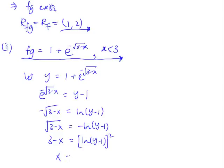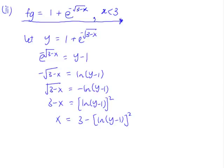Making x the subject. We get x equals 3 minus the ln of y minus 1 square. So this is the x the subject. So therefore, fg inverse will become 3 minus the ln of x minus 1 square.